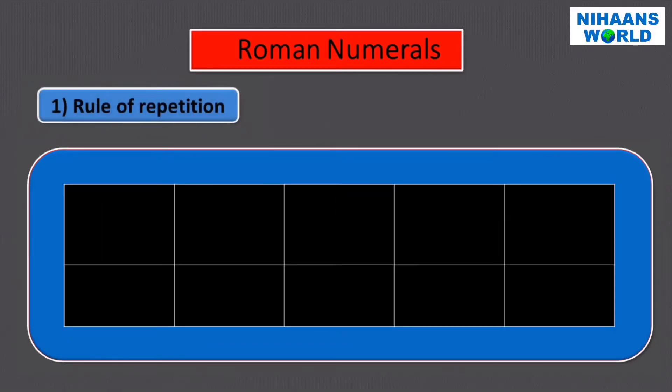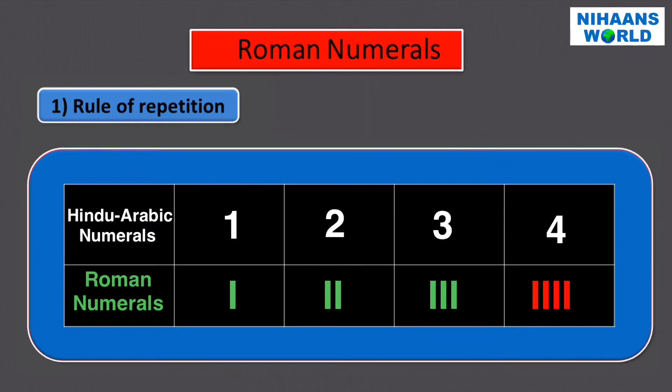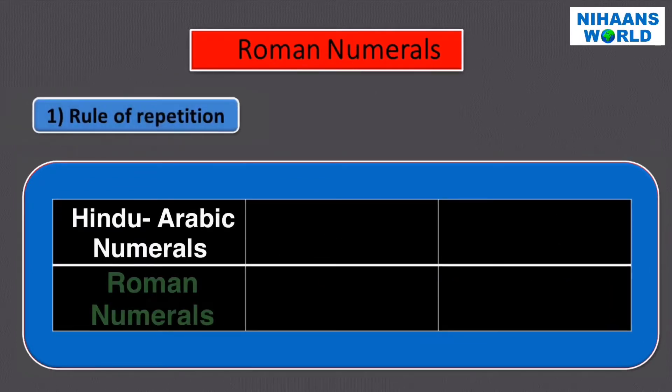Symbols I, X, C, and M can be repeated three times at maximum. You can write one as I, two as I I, and three as I I I in Roman systems, but you cannot write four as I I I I. The symbols V, L, and D are never repeated—that is, symbols for five, fifty, and five hundred can't be repeated.